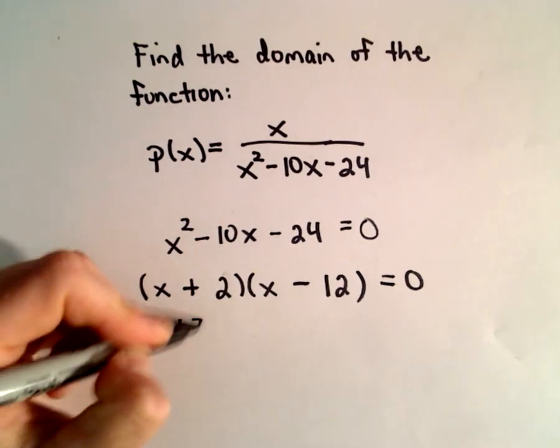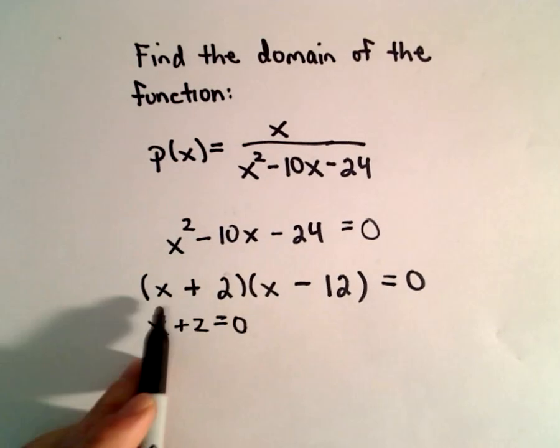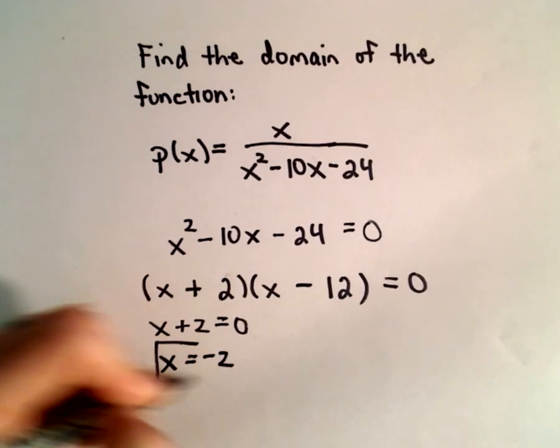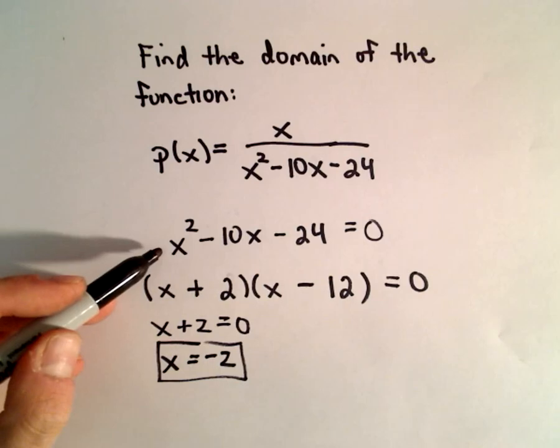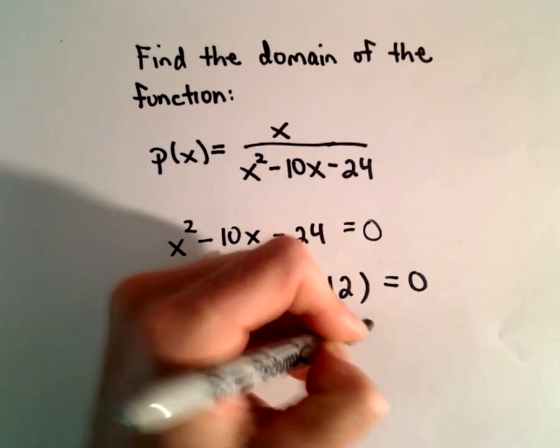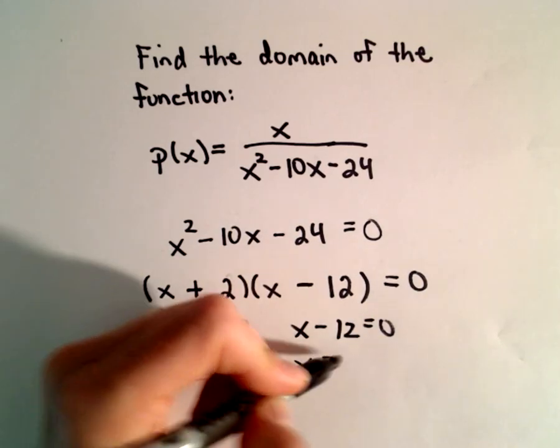And then we just take each factor, set it equal to 0, and solve. So from the first factor, we'll get that x equals negative 2 as a solution to our quadratic. And then we'll get x minus 12 also equals 0. Well, we can add 12 to both sides.